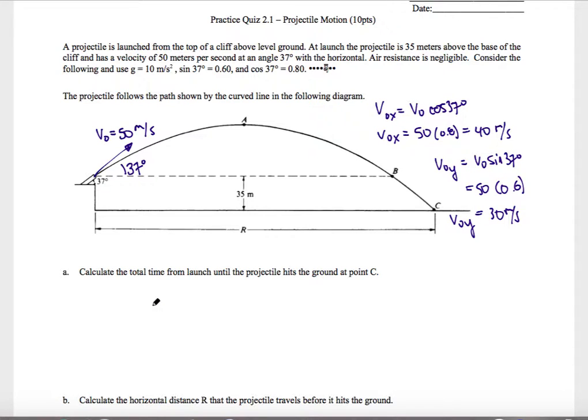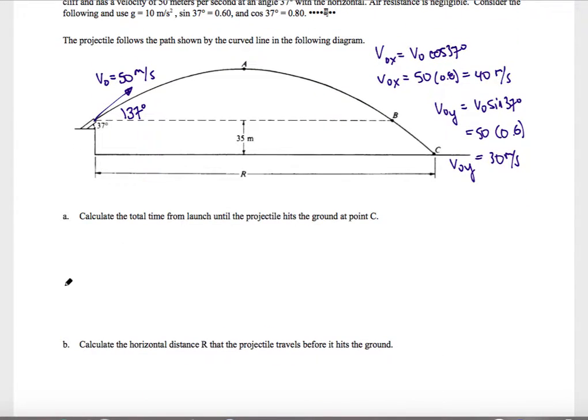Part a is asking for the total time from launch until the projectile hits the ground at point C. So just a reminder that time in the air only depends on the vertical motion. So I'm actually going to start with my second kinematic equation in the y direction. So y equals y0 plus v0y times t plus 1 half ay t squared.